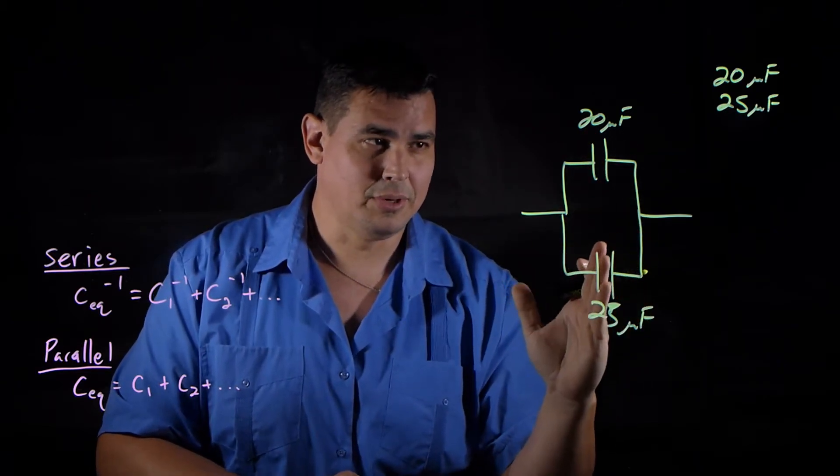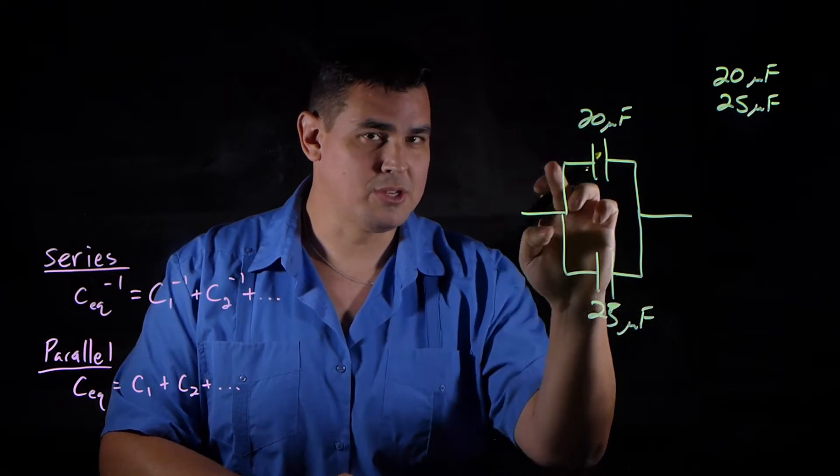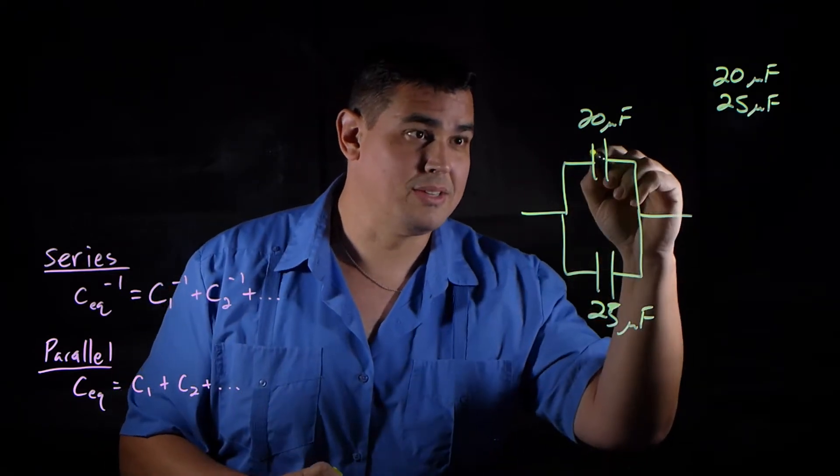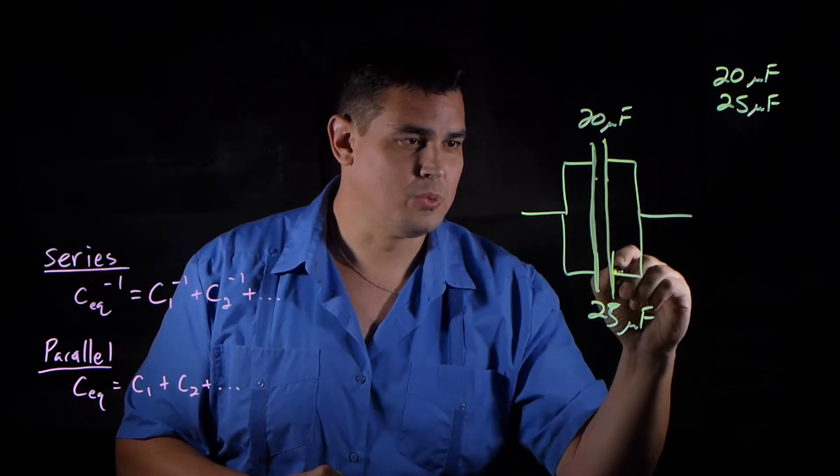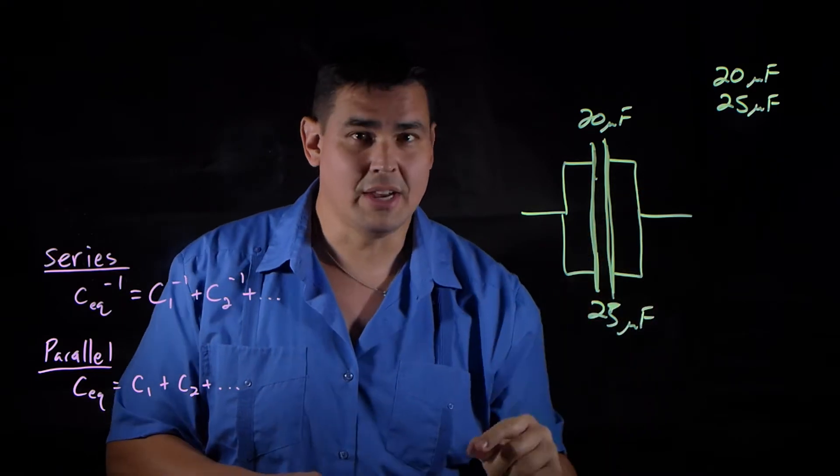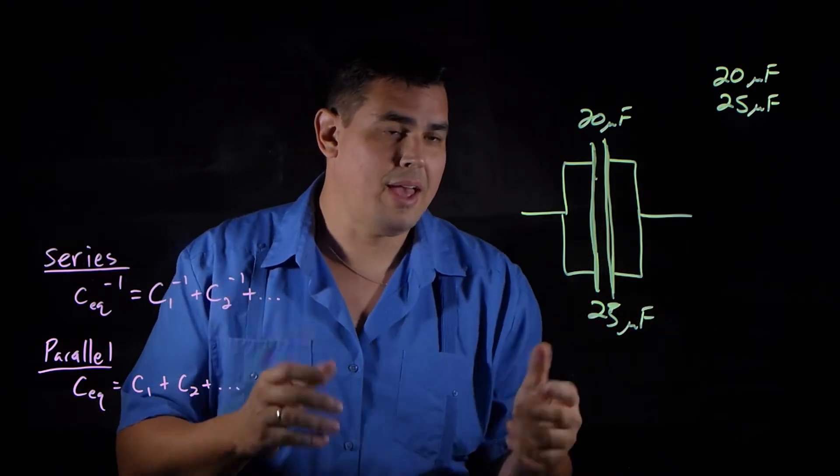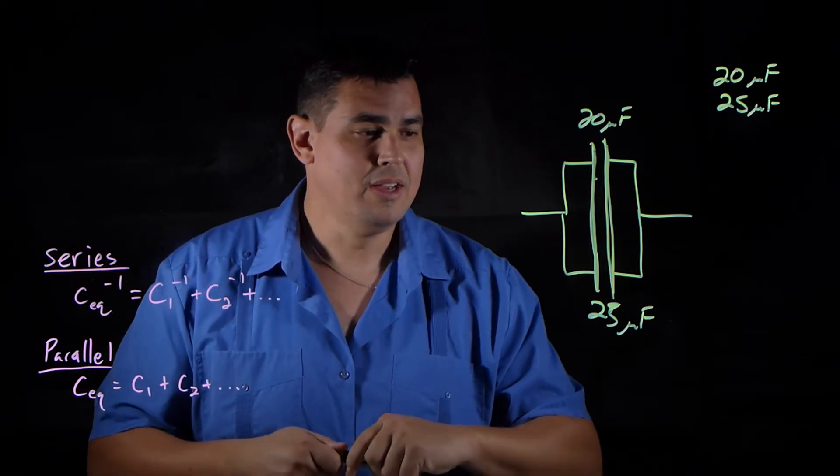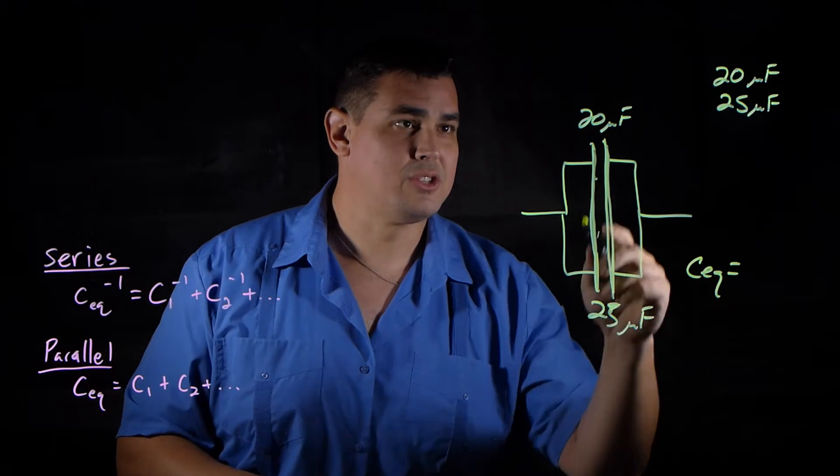What's happening is this plate is connected to this plate by this wire. So in reality, this is one big plate right here and this is one big plate right here, because those two plates are connected by a conducting wire that has basically zero resistance. It just acts like you've added those two plate areas together.